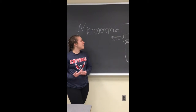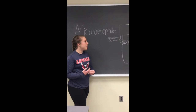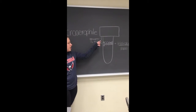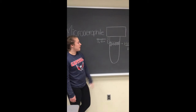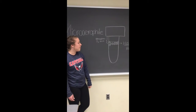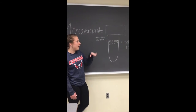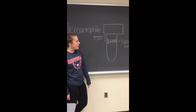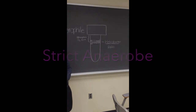The next kind of bacteria is a microaerophile, so it needs oxygen to grow, but at high concentrations, it's poisonous. In a test tube, you can see the bacteria growing at the top of the test tube, but not the very top. A good example is Helicobacter pylori.